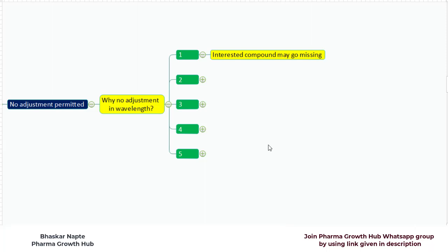How is this possible? Let's say you have a detection wavelength of 254 nanometer given in a monograph method. If you decide to change the detection wavelength to 300 nanometer, and if there is no absorbance found for the compound at 300 nanometer, then that particular compound will never get detected with your changed detection wavelength. Even though that compound is present inside the sample, it will just go missing.